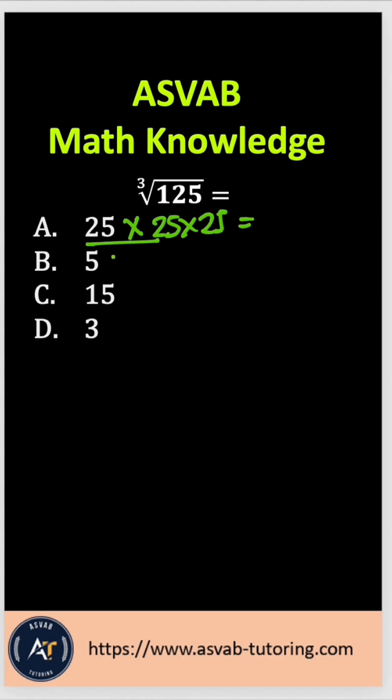The next option is 5. So let's multiply by itself three times, 5 times 5 times 5. So 5 times 5 is 25, times 5 gives you 125, which is the correct answer option.